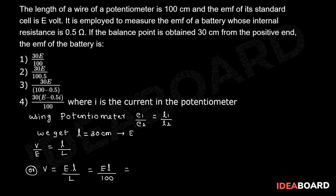This becomes 30E by 100. Since capital L is equal to 100 cm and small l is equal to 30 cm, therefore 30E by 100. The first option is the right option.